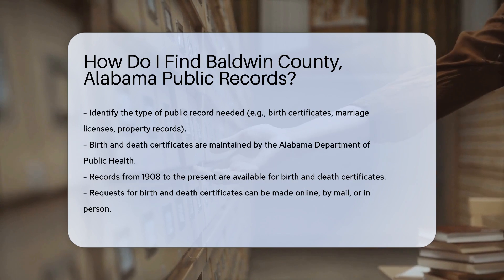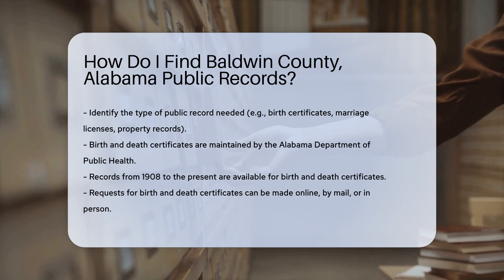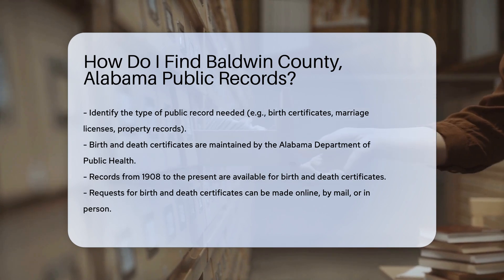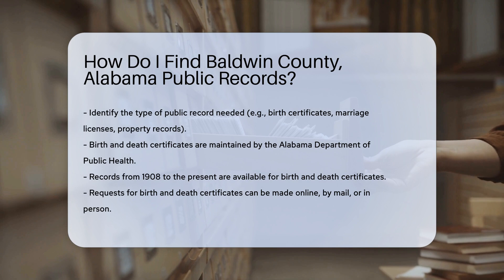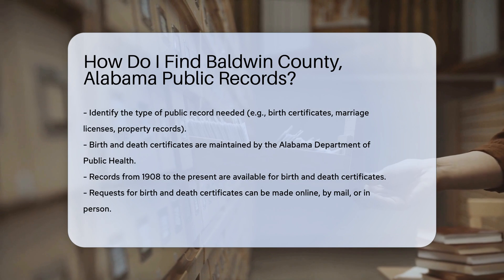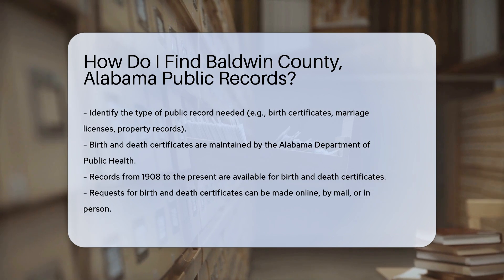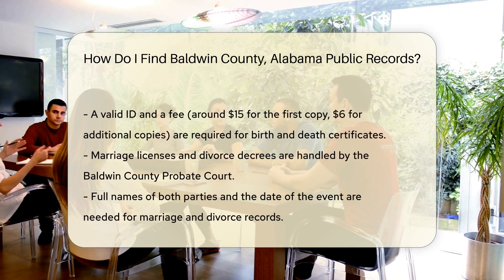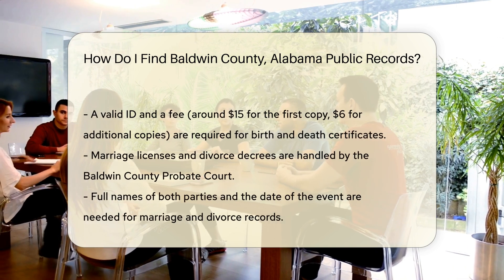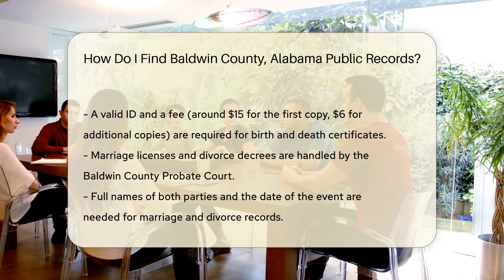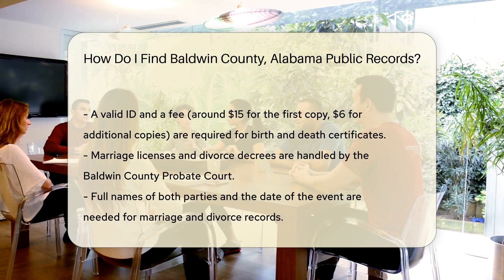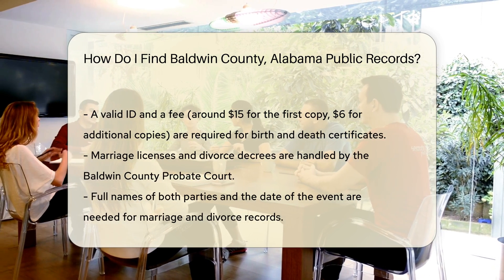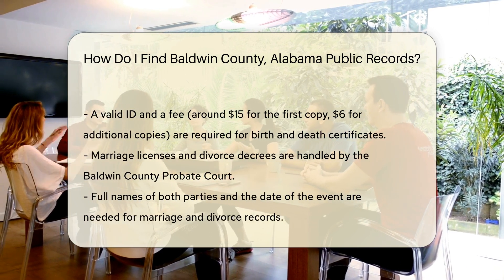For birth and death certificates, you will need to contact the Alabama Department of Public Health. They maintain records from 1908 to the present. You can request these records online, by mail, or in person. Be prepared to provide a valid ID and pay a small fee, usually around $15 for the first copy and $6 for each additional copy.